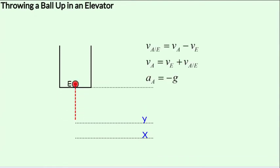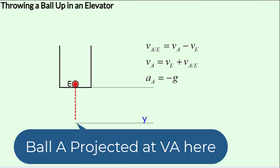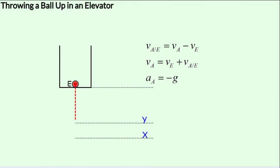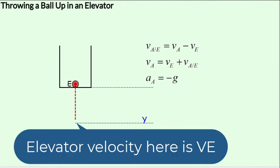Let's call the red ball ball A. The red ball is projected with a velocity of V_A with respect to the ground when the elevator was at position Y. V_A will be the initial velocity of ball A when it is fired upwards. At that point in time, when the ball is fired up, assume that the elevator is moving with a velocity of V_E. The elevator speed will keep increasing from that point on as it is accelerating upwards with an acceleration of a.